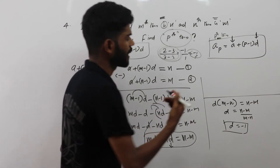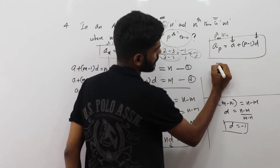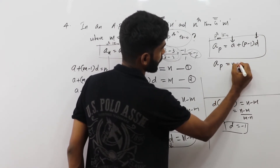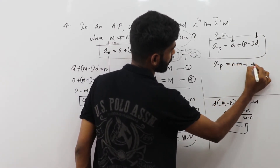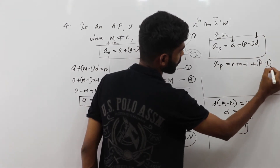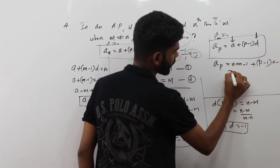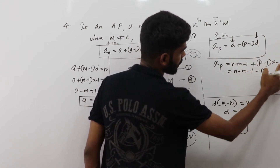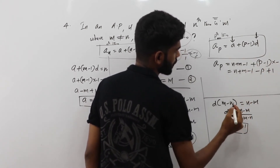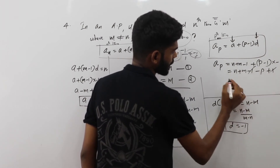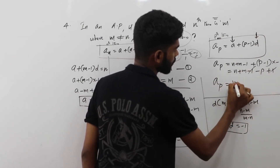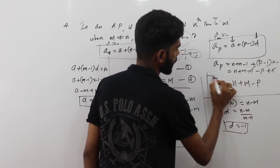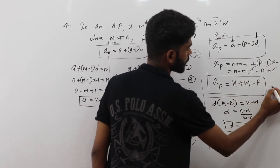Finally, substituting A and D into the Pth term: A_P equals A plus (P minus 1) times D, which is (N plus M minus 1) plus (P minus 1) times (minus 1). Simplifying: the minus 1 and plus 1 cancel, giving A_P equals N plus M minus P. This is the final result.